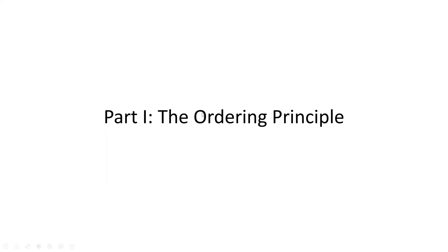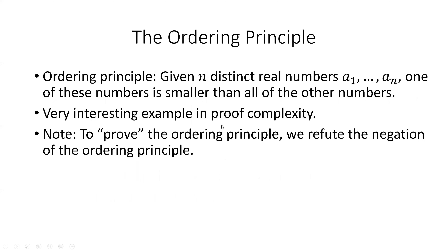So first, the ordering principle. The ordering principle says that if we have n distinct real numbers, a1 through an, one of these numbers must be smaller than all of the other numbers. The ordering principle is a very interesting example in proof complexity. When I say that we prove the ordering principle, what I actually mean is that we refute the negation of the ordering principle on n elements.